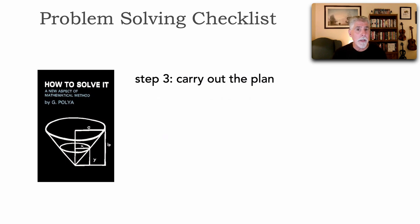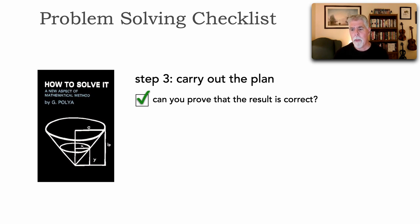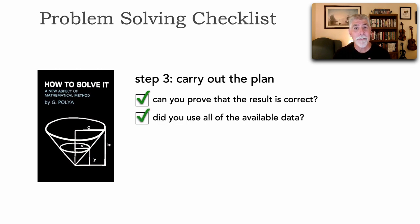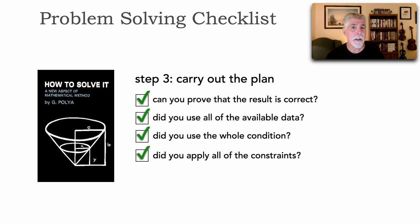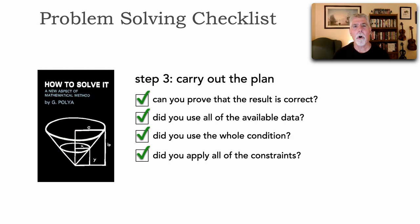Step three, says Polya, is to carry out the plan — can you prove that the results you came up with are actually correct? Did you use all of the available data? Did you use the whole condition and all of the constraints? Sometimes when we're working, we get so excited about solving a problem that we forget to look back and say, wait, there are two other conditions we didn't address. I have fallen into that trap so many times. This checklist is very powerful for making sure we check all conditions and constraints.